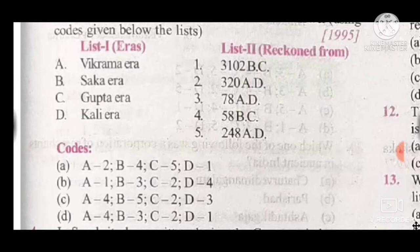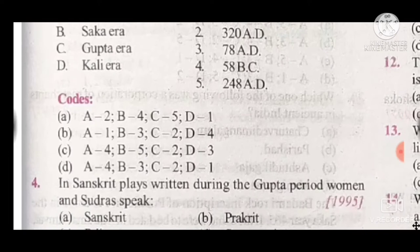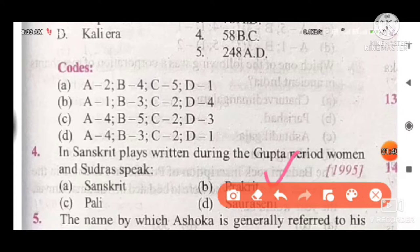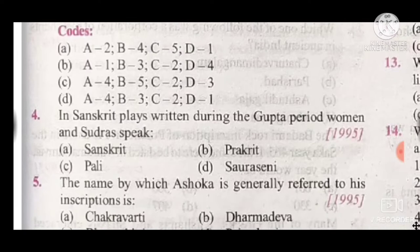Question 4: In Sanskrit plays written during the Gupta period, women and Shudras speak which language? The answer is Prakrit. Option B is the correct answer to question 4.